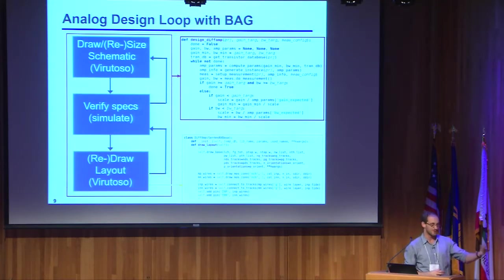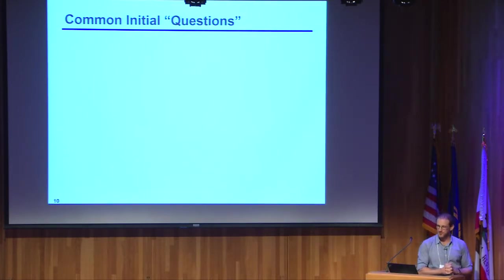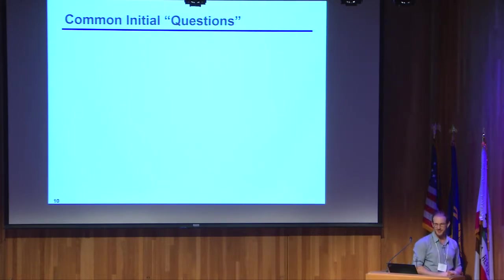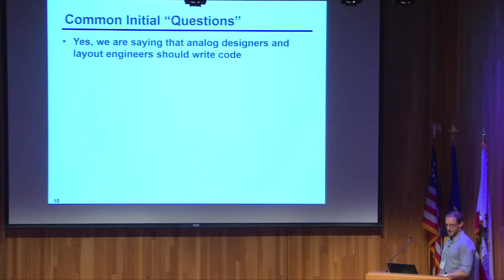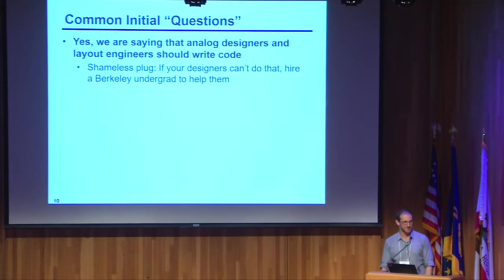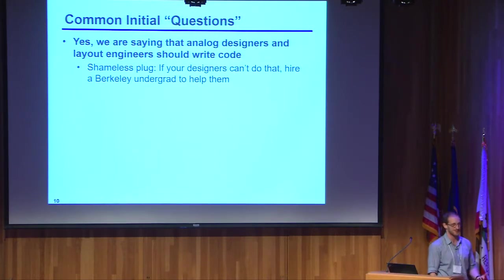You write that as a piece of code so that in the future somebody can give you some set of parameters, re-execute the code, and get a new design out the door. At this point there are some common initial questions. The most common from analog folks goes: my best analog designers finished school before coding was standard practice, and they're analog people — they just don't like code in the first place. So yes, I am indeed saying that both your analog designers and your layout engineers should write code. If they have objections, make the shameless plug: go hire a Berkeley undergrad. They'll write the code in no time flat. You could probably hire high school students for this — there's nothing really super sophisticated happening here.